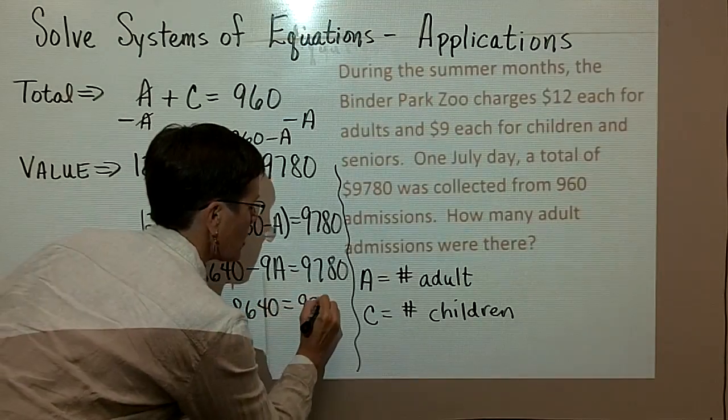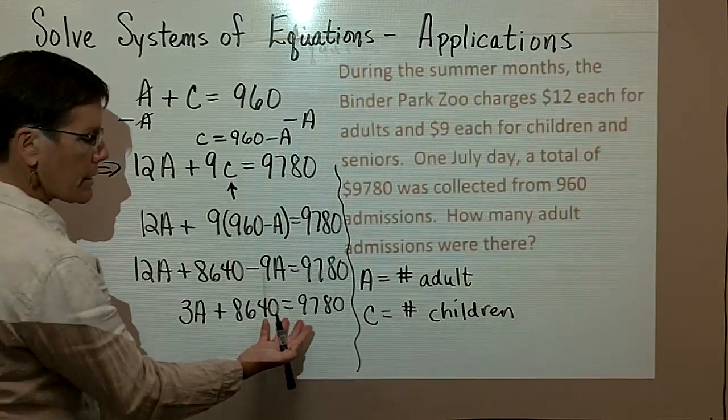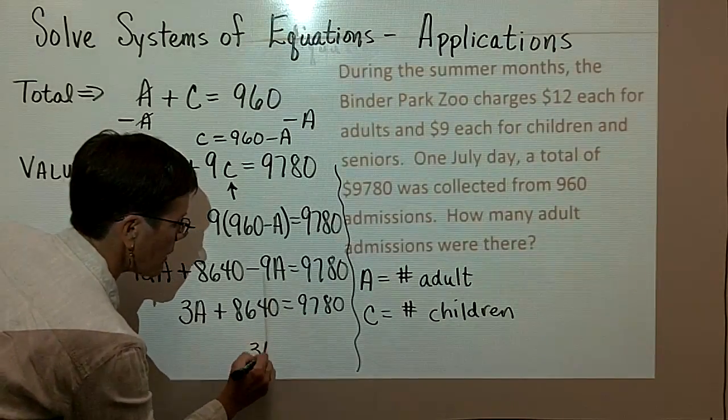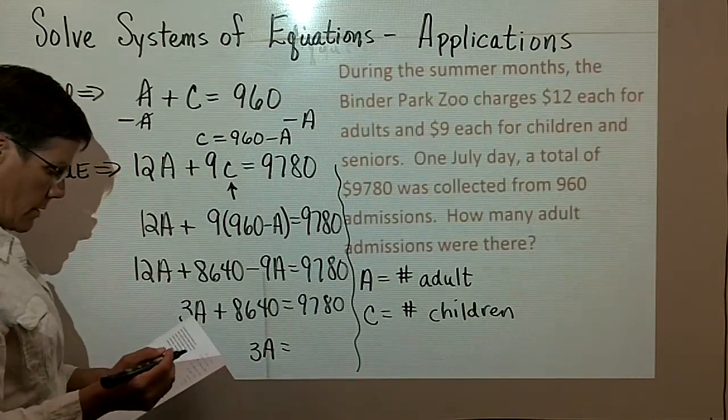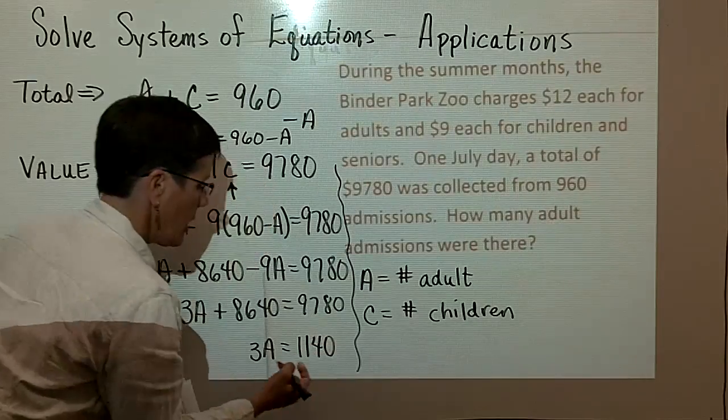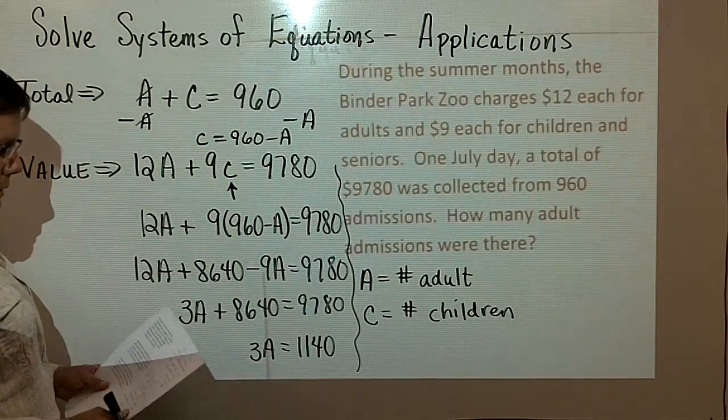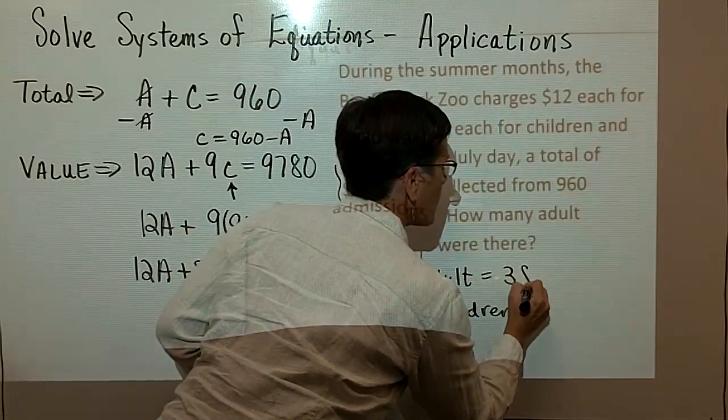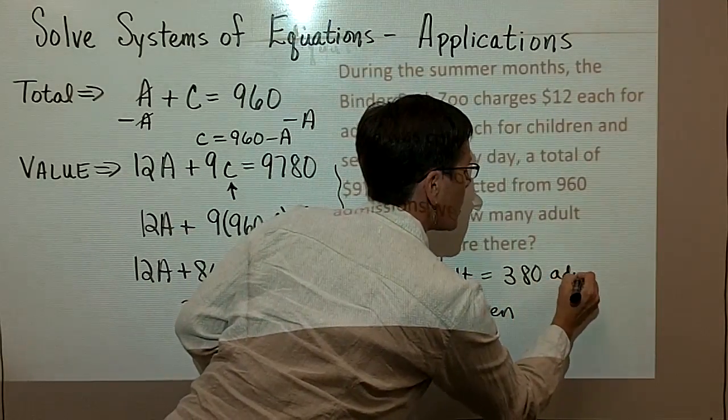I'm going to subtract 8640 from both sides of this statement. So I'll have 3A left. And the 9780 minus the 8640 is 1140. And then when you divide both sides by 3, we should get that A is equal to 380 adults.